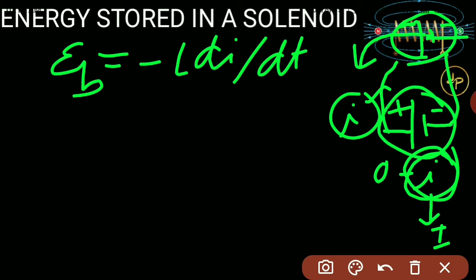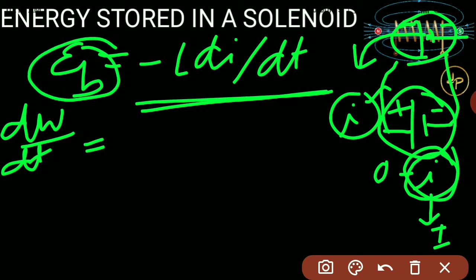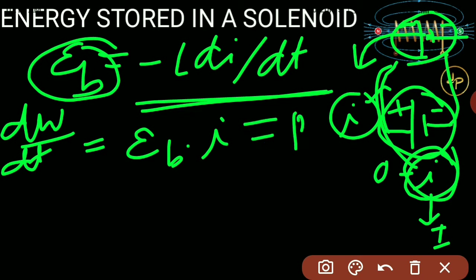This back EMF has to be worked against to establish the current. So, to find the rate of work done, dW/dt equals the magnitude of the EMF that the battery sends in the positive direction — that is, the value of the back EMF — multiplied by the current. This is because potential difference times current equals power, and dW/dt is work done per unit time. So the value of the back EMF, E_B, is L dI/dt.